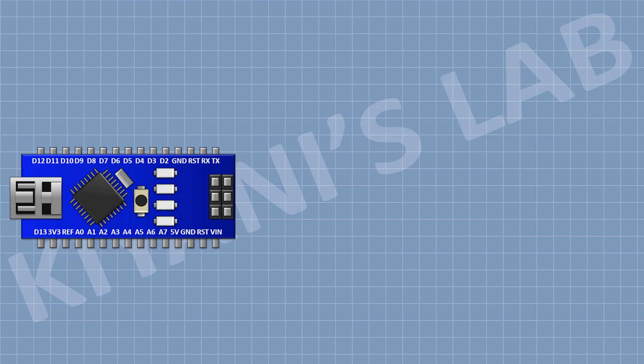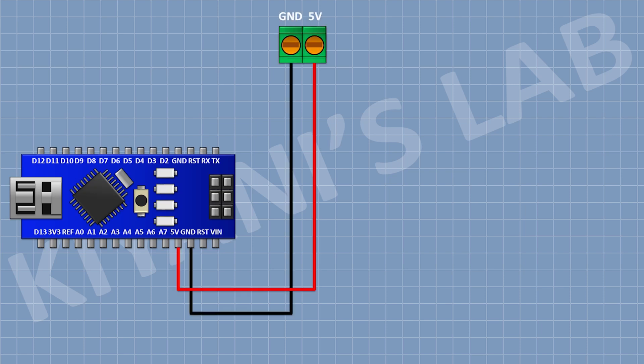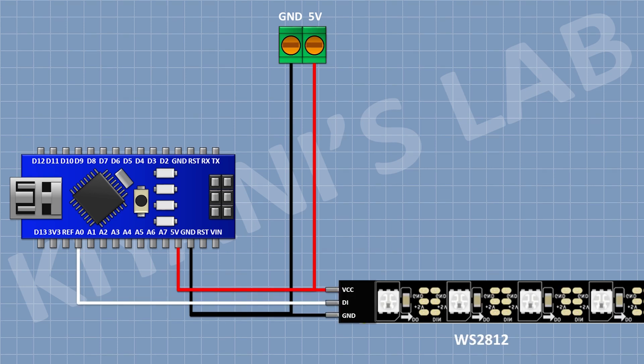First connect the Arduino. Now connect a two-pin terminal block and connect one pin to the 5V pin of Arduino and the other pin to ground. Now connect the NeoPixel LED light — connect its VCC pin to the 5V pin of Arduino, its ground pin to ground, and its data pin to the A0 pin of Arduino.